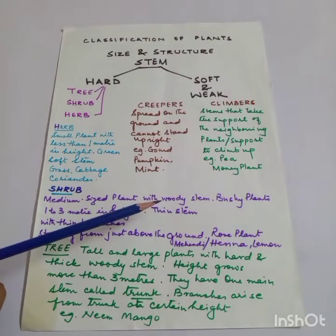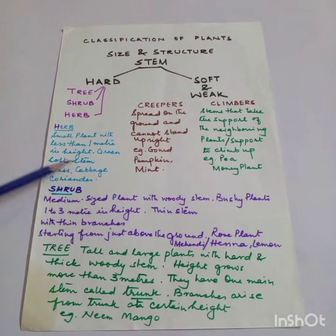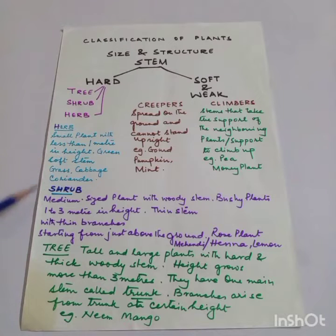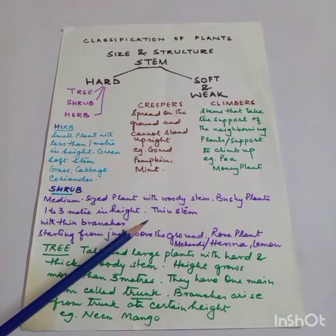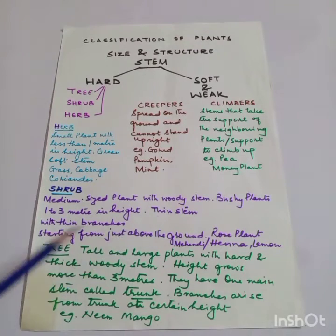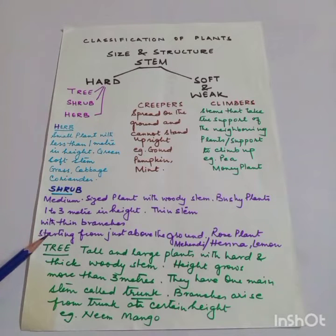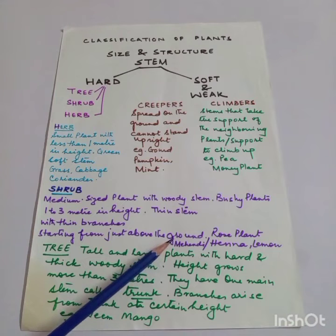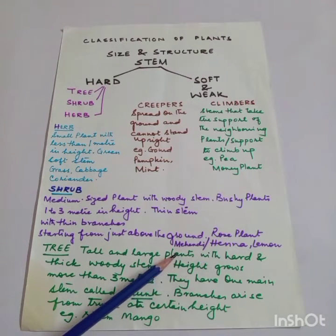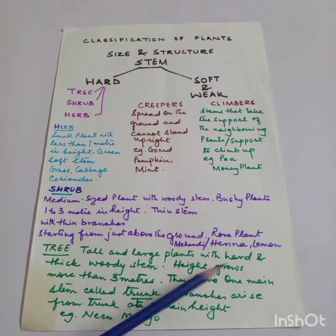Shrubs have thin branches starting from just above the ground. Examples include rose plant, mehendi (henna), and lemon plant.